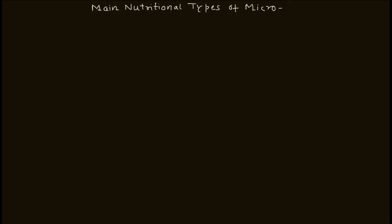Hi everyone, welcome to the Basic Science Series. Today we're going to discuss the main nutritional types of microorganisms. In the previous video we discussed a few types of microorganisms based on their nutritional requirements; today we're going to discuss them in a little more detail. Let's start with phototropes — phototropes are the organisms that use light as an energy source.